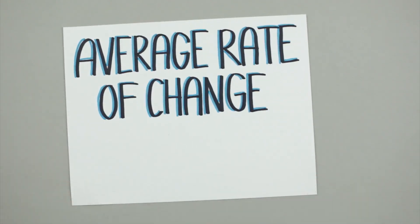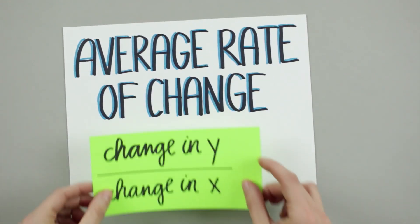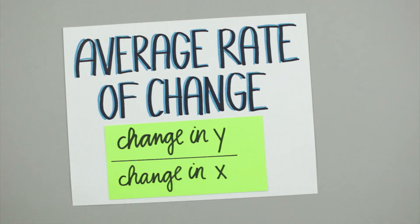When we talk about average rate of change, what we're really talking about is the total change in the dependent variable over the total change in the independent variable.